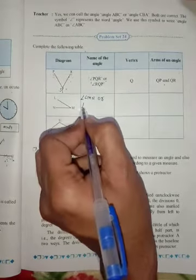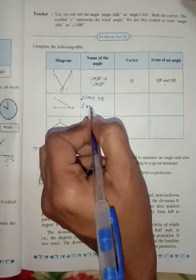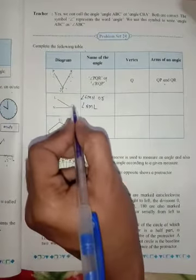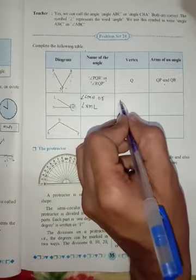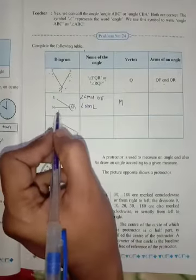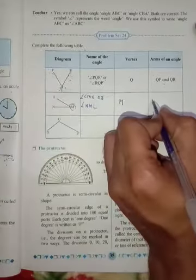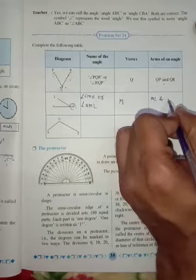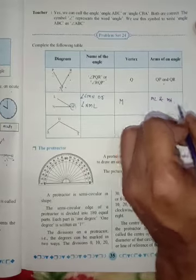Angle INL or angle MNL. Now write the vertex, so N is the vertex of this angle. So you can write here N. Write the arms of an angle - so it is ML and MN. So this is the arms of this angle.